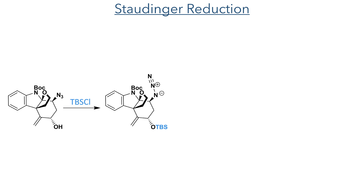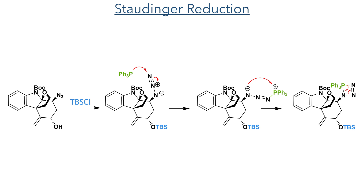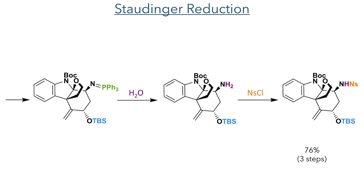The newly produced hydroxyl group was then protected as a TBS ether using TBS chloride, and the newly introduced azide was reduced to an amine using a Staudinger reduction. Triphenylphosphine acts as a nucleophile towards the terminal nitrogen of the azide group, which cyclises to form a four-membered ring. In a manner similar to the Wittig reaction, this ring decomposes liberating nitrogen gas and forms an aminophosphorane intermediate, which is hydrolyzed upon aqueous workup. The product was then protected with a Cbz group, producing the protected amine in a 76% yield over three steps.